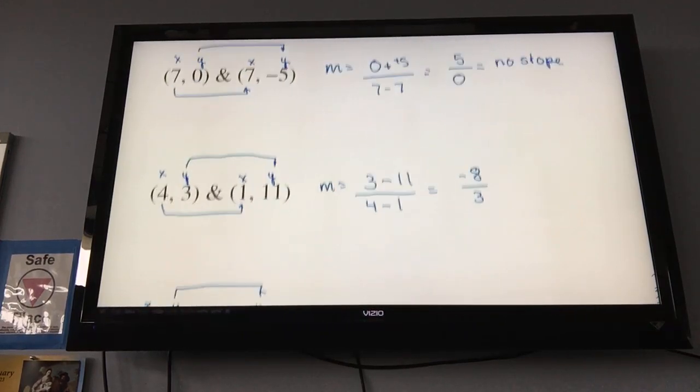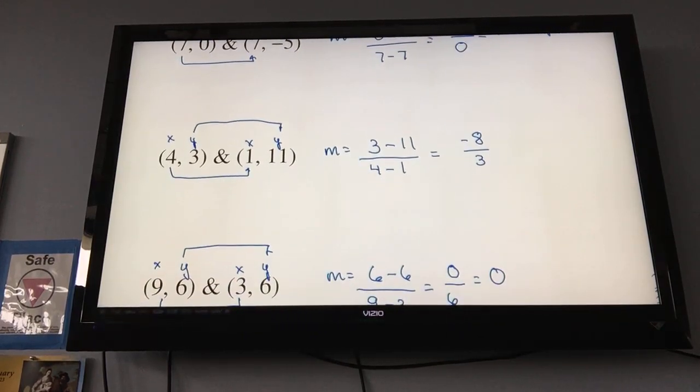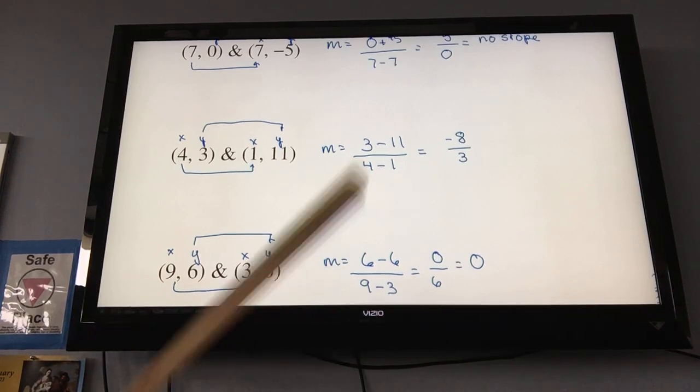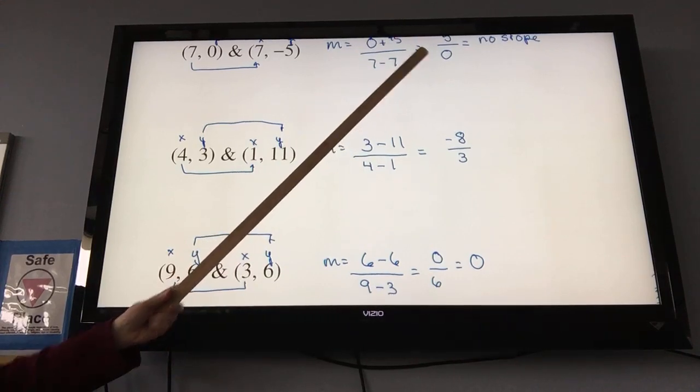So, 0 slope and no slope are two different things. 0 on the bottom gives you a no slope. 0 on the top gives you 0. Know the definite difference between those two. If you're not sure, punch it in your calculator. This one gives you an error message, no slope. This one gives you 0.